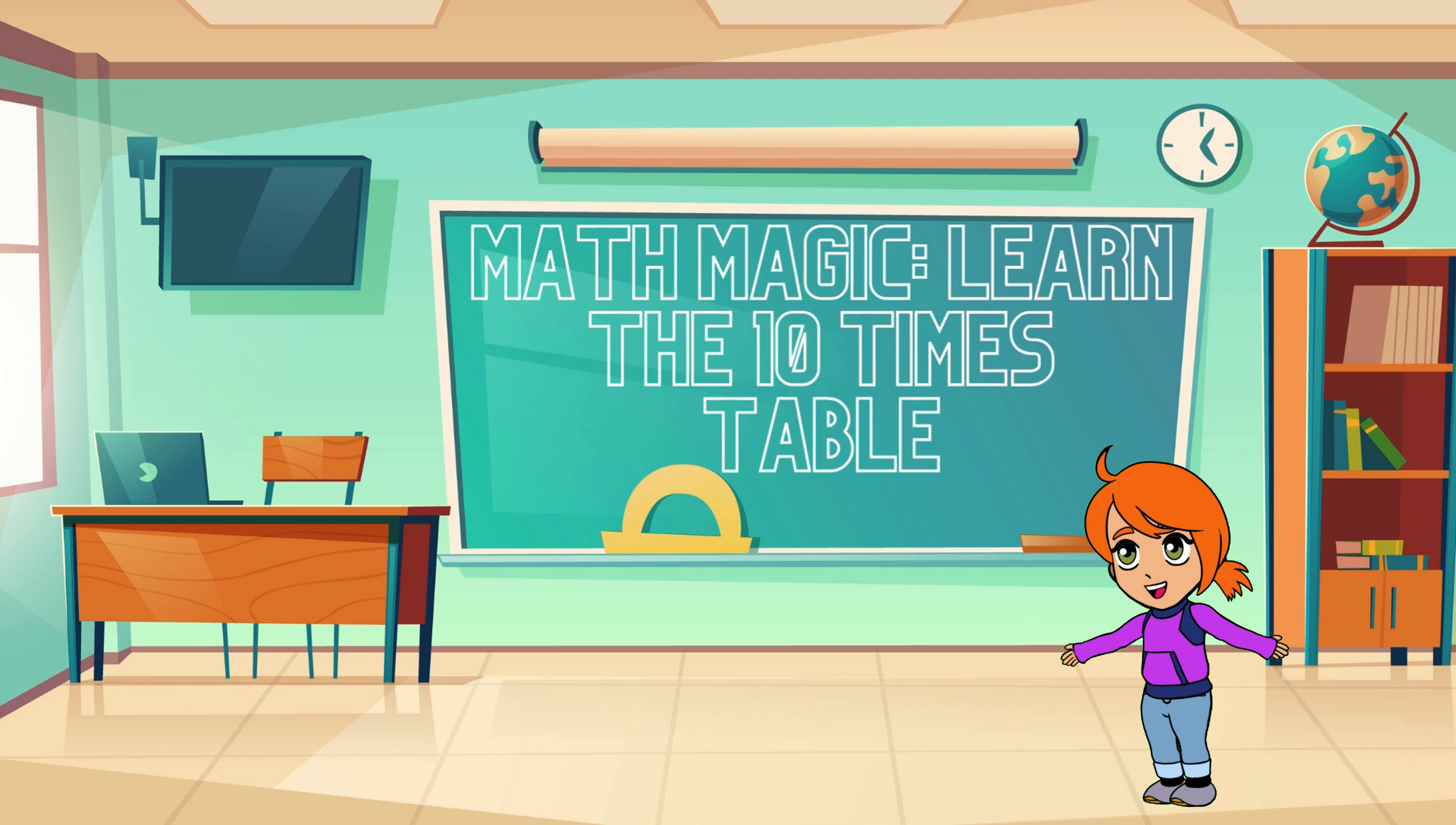Now here's a little secret about the 10 times table: every answer ends in a zero. Pretty cool, right? This little trick makes multiplying by 10 super simple and super fun.